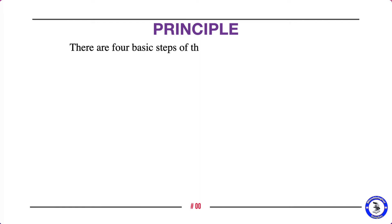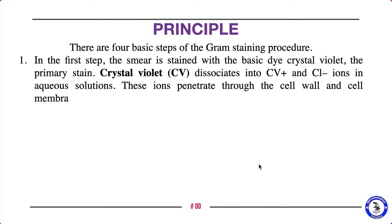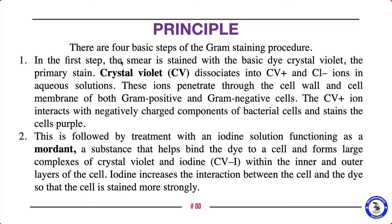Now let's move on to the principle of gram staining, which is very important. In gram staining, we use four basic steps. In the first step, the smear is stained with the basic dye crystal violet, which is the primary stain. Crystal violet dissociates into CV+ and Cl− ions in aqueous solution. These ions penetrate through the cell wall and membrane of both gram positive and gram negative cells. The CV+ ion interacts with the negatively charged components of the bacterial cells, staining them purple.